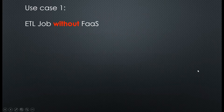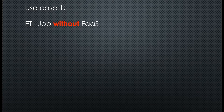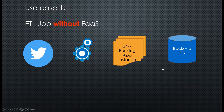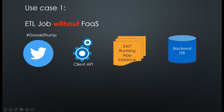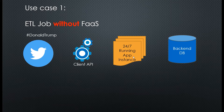There are several use cases where we can implement Function as a Service. Think about an ETL job — extracting data from different data sources, transforming and loading the data to another database. For example, consider a Twitter platform where we use a Twitter API to retrieve tweets. This ETL application processes tweets tagged with a Donald Trump tag and saves the data into a back-end database.